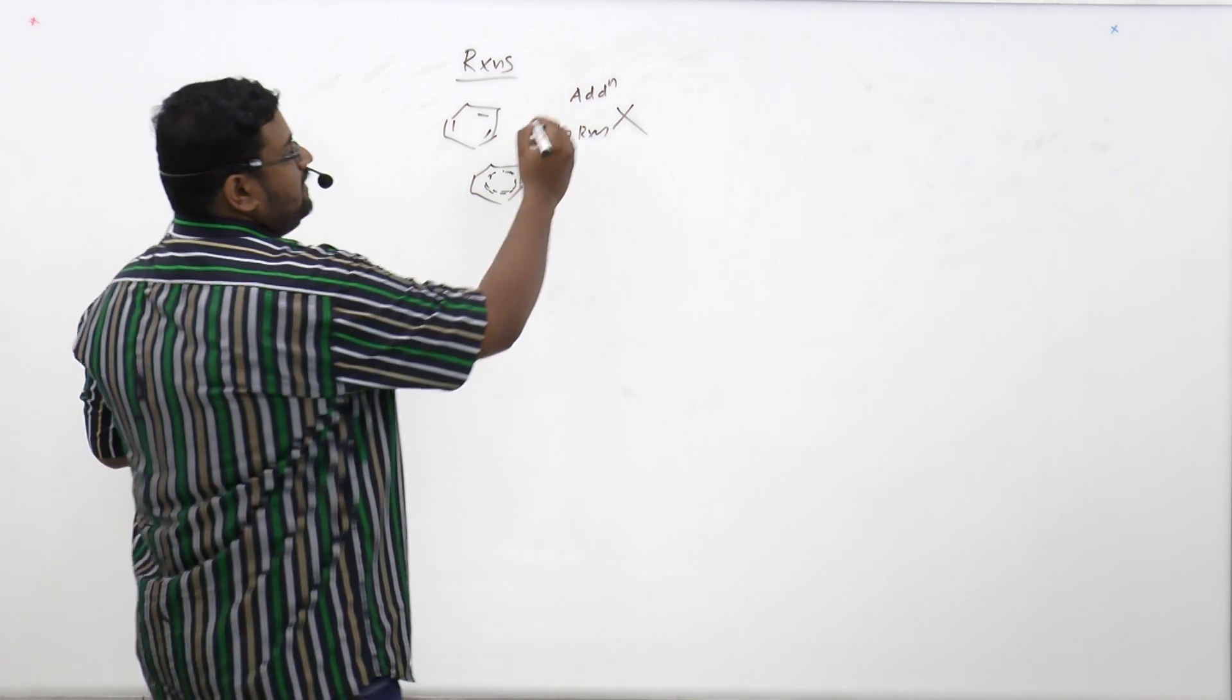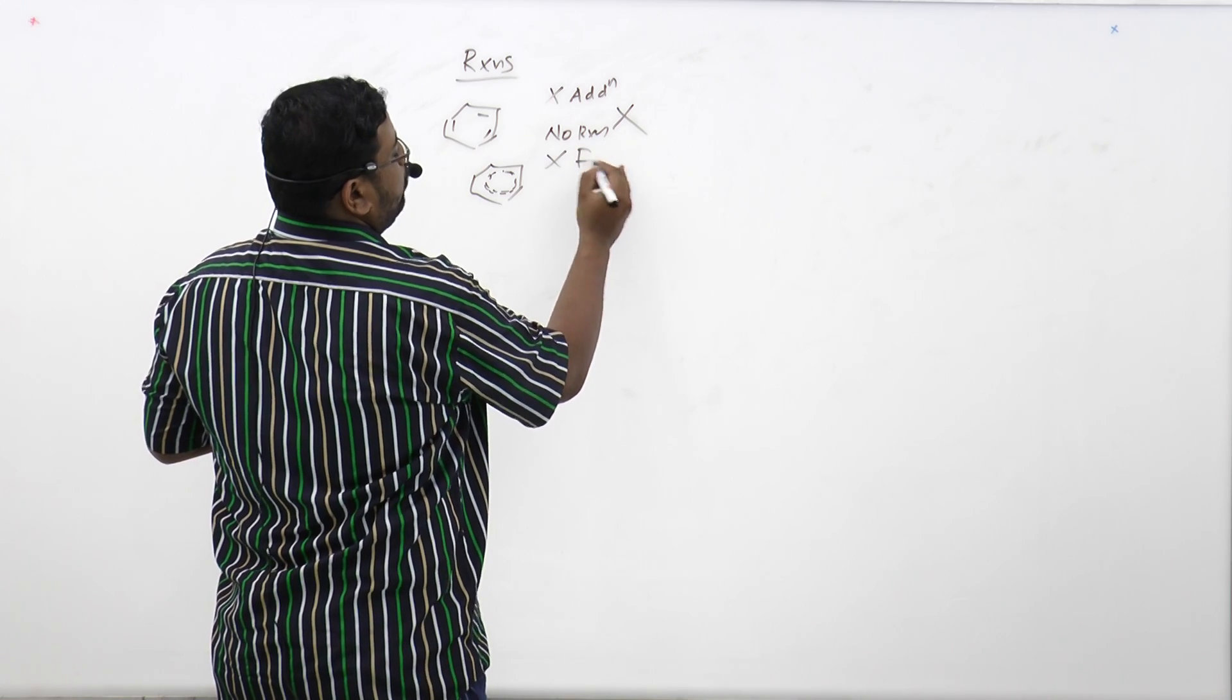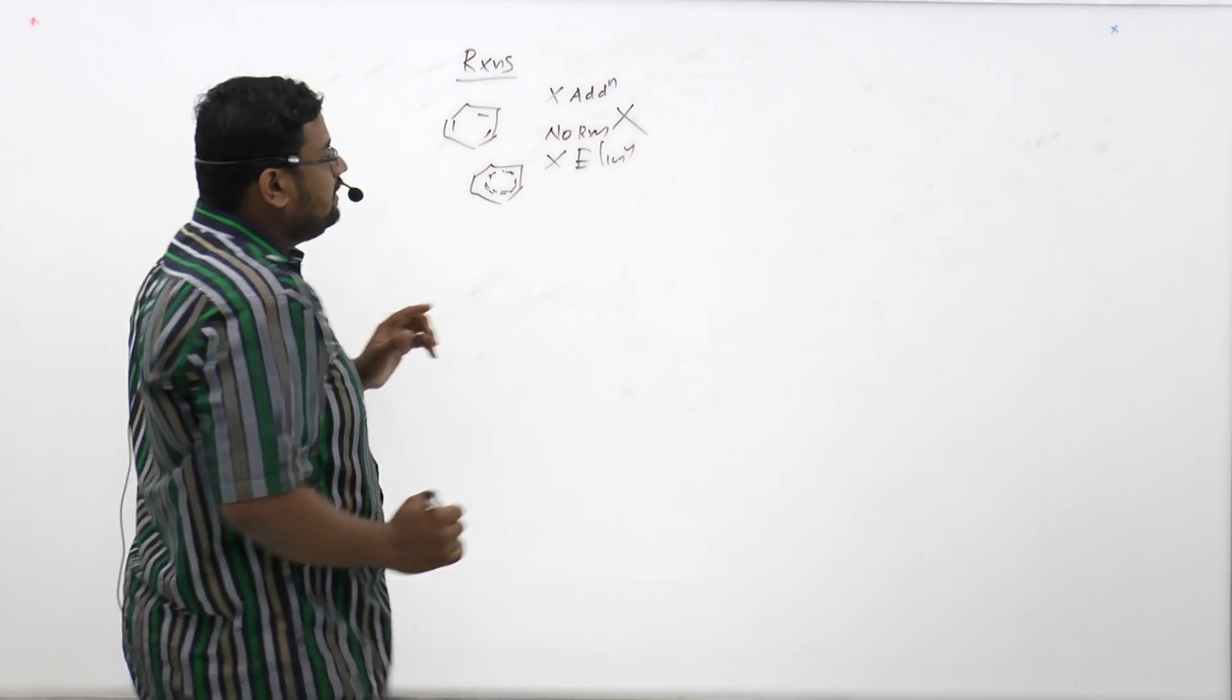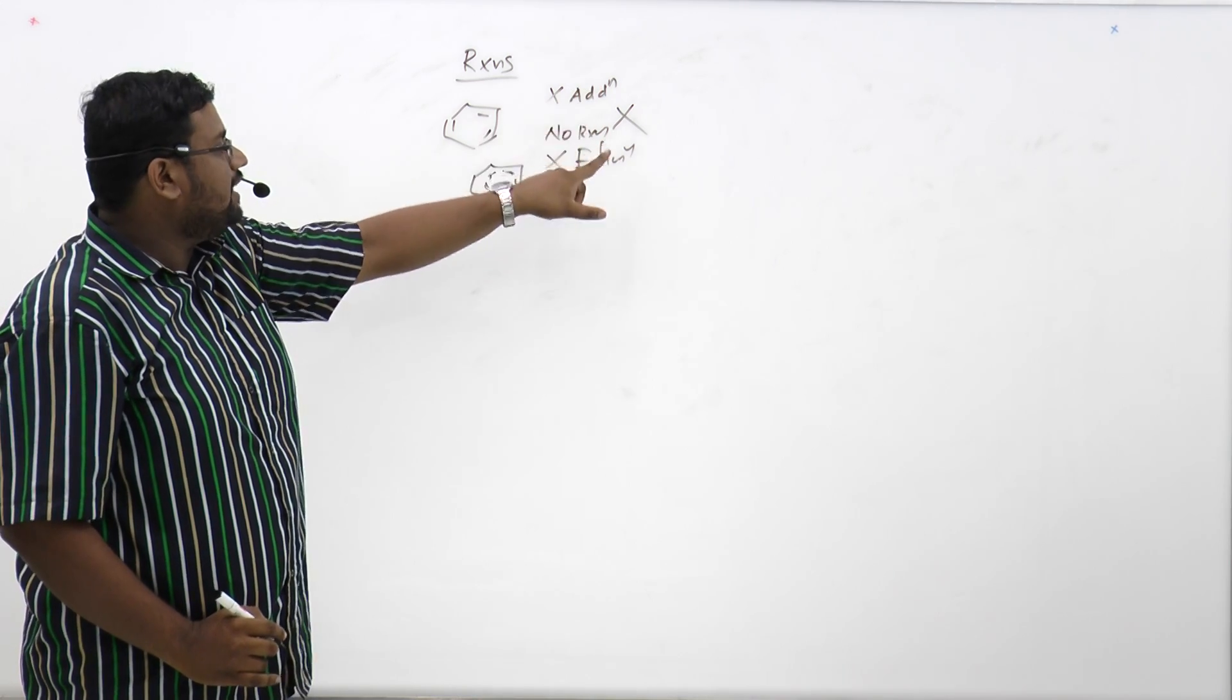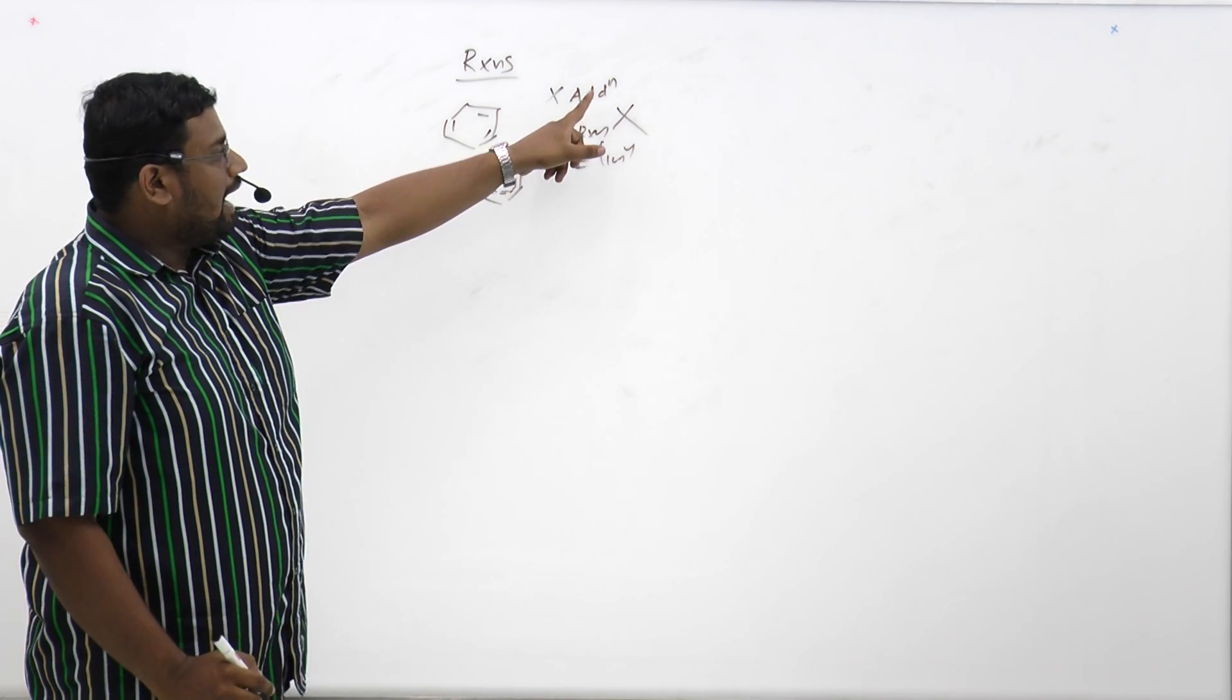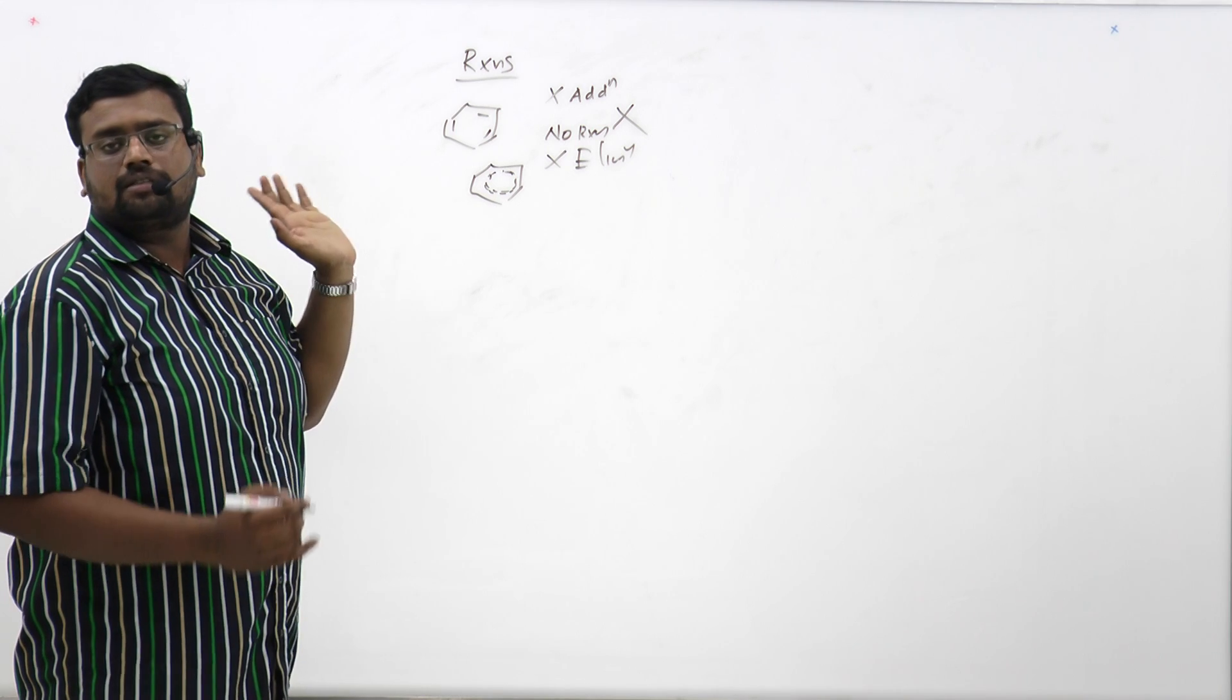If addition is not happening, there is no chance for elimination. The elimination is the reverse process of addition. Addition and elimination are just opposite. If addition is not happening, elimination is also not happening.